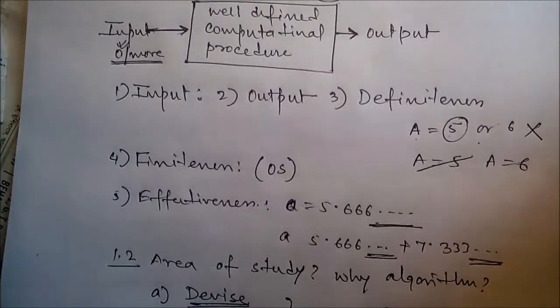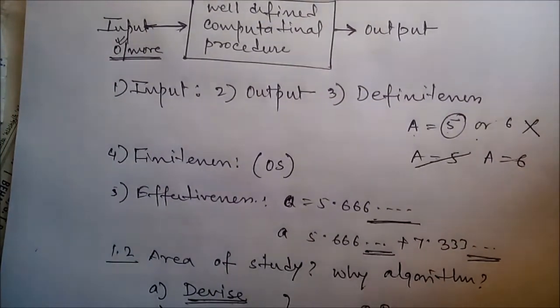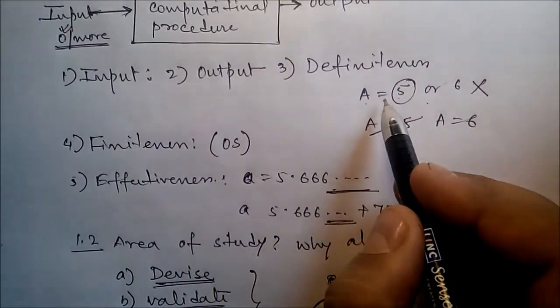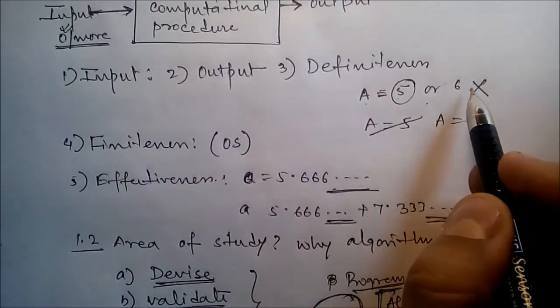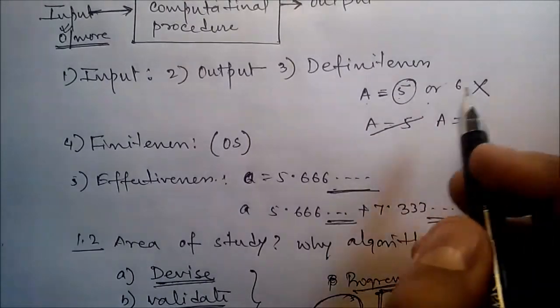Further, definiteness: each instruction must be clear and unambiguous. This means we cannot write 'A is equal to 5 or 6 or take anything' - we cannot assume anything. It should be clear - it should be 5 or 6 or something specific, but one concrete value.